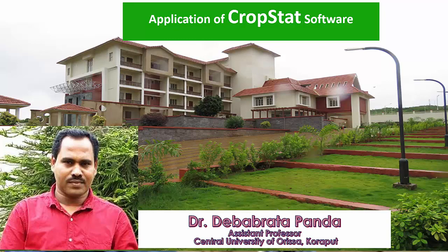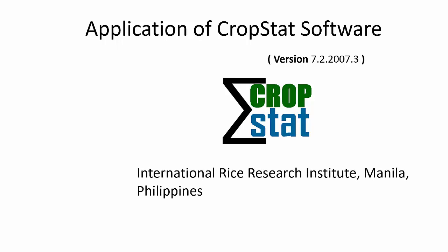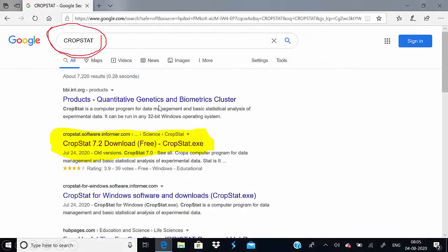Before going further, let us start with the basics of CropStat software. This software was developed by the International Rice Research Institute, Manila, Philippines. It is an important statistical software used to analyze different types of statistical data. The original version can be obtained from the IRRI website, and it is also available freely — you can download it by searching 'CropStat' on Google.